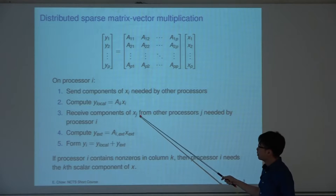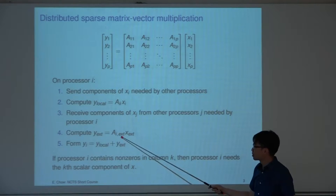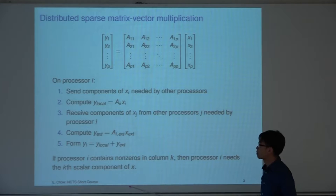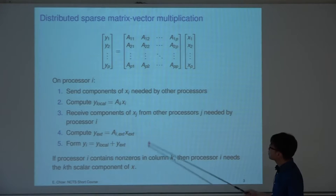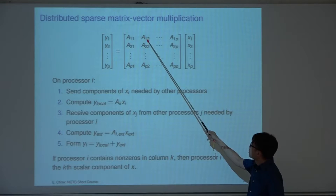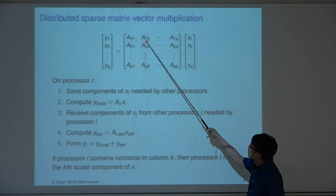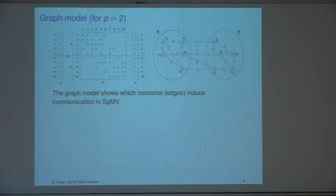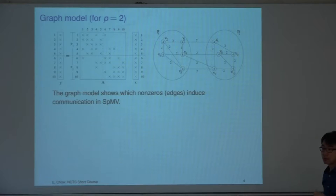Once the external components of x are received, we compute the external component of y and form the final product. In particular, if processor i contains non-zeros in column k, then xk is going to be needed in the computation. Here's where the graph part comes in: the graph model shows which non-zeros in the sparse matrix will induce communication in the sparse matrix-vector product.